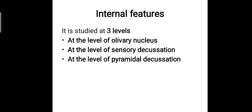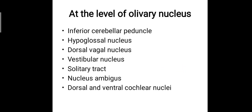The internal features of the medulla are studied at three levels: at the level of the olivary nucleus, at the level of sensory decussation, and at the level of pyramidal decussation. At the level of the olivary nucleus, the structures present include the inferior cerebellar peduncle, the hypoglossal nucleus, the dorsal vagus nucleus, vestibular nucleus, solitary tract nucleus, the nucleus ambiguus, and the dorsal and ventral cochlear nuclei.